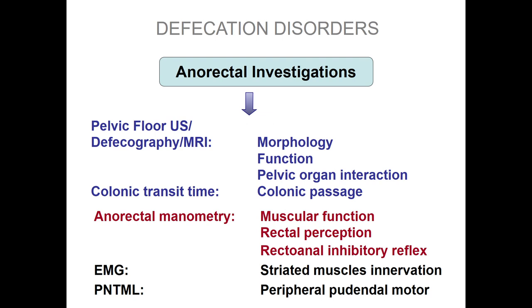Why perform anorectal investigation? Imaging can provide information regarding morphology of the pelvic organs. Anorectal manometry gives information regarding rectal perception, rectal compliance, and EMG gives information regarding the functionality of the nervous pathway.